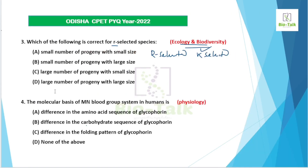Reviewing the question options: the correct answer is that K-selected species have a small number of offspring and provide high parental care, while r-selected species produce a large number of offspring with small size and low parental care. K-selected species have large-sized offspring. The answer focuses on the relationship between offspring number, size, and parental investment.